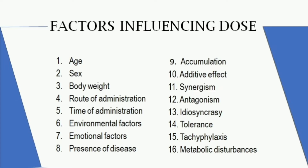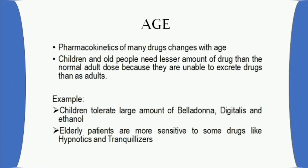Let's talk about each factor. First, Age. Pharmacokinetics refers to what a drug does to your body. Age matters because children and elderly people require a lower dose compared to adults. This is because excretion is also poor in these groups.